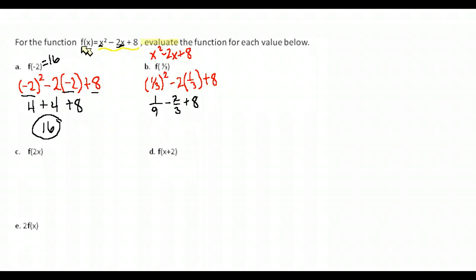So a common denominator of 9, I would have to multiply this two thirds by 3 in the top and bottom. And this 8 over 1, I'd have to multiply by 9. That gives me instead. I now have 1 ninth minus 6 ninths plus 72 ninths. And now all I have to do is add those fractions or combine those fractions. So 1 minus 6 is going to give me negative 5 ninths. And negative 5 and a positive 72 gives me 67 ninths. There's my answer.